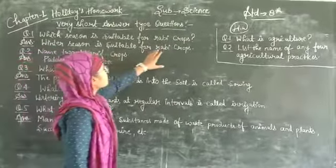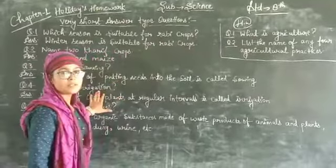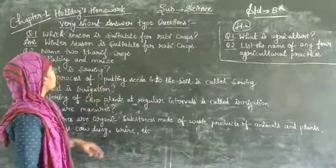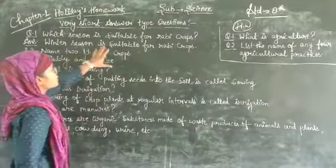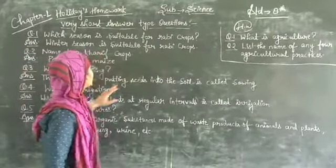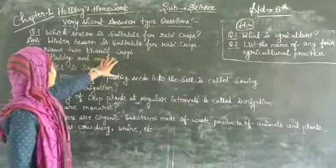Which season is suitable for rabi crops? The main and foremost season, winter season, is suitable for rabi crops. Second one is name two Kharif crops.